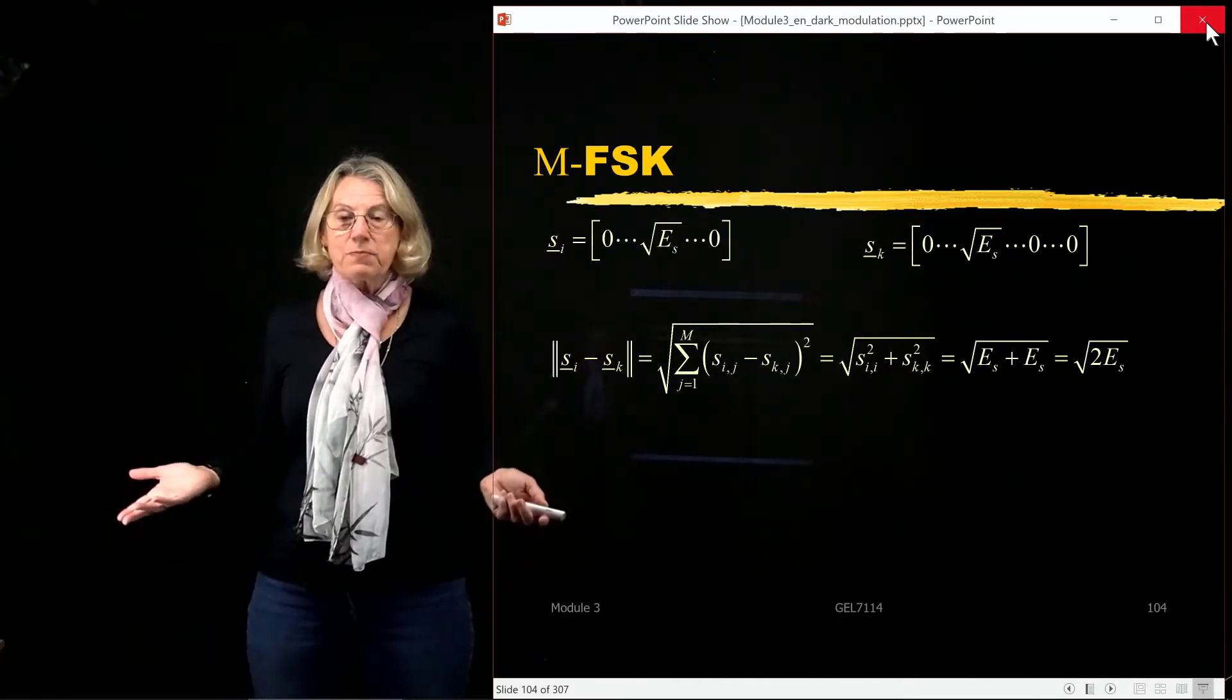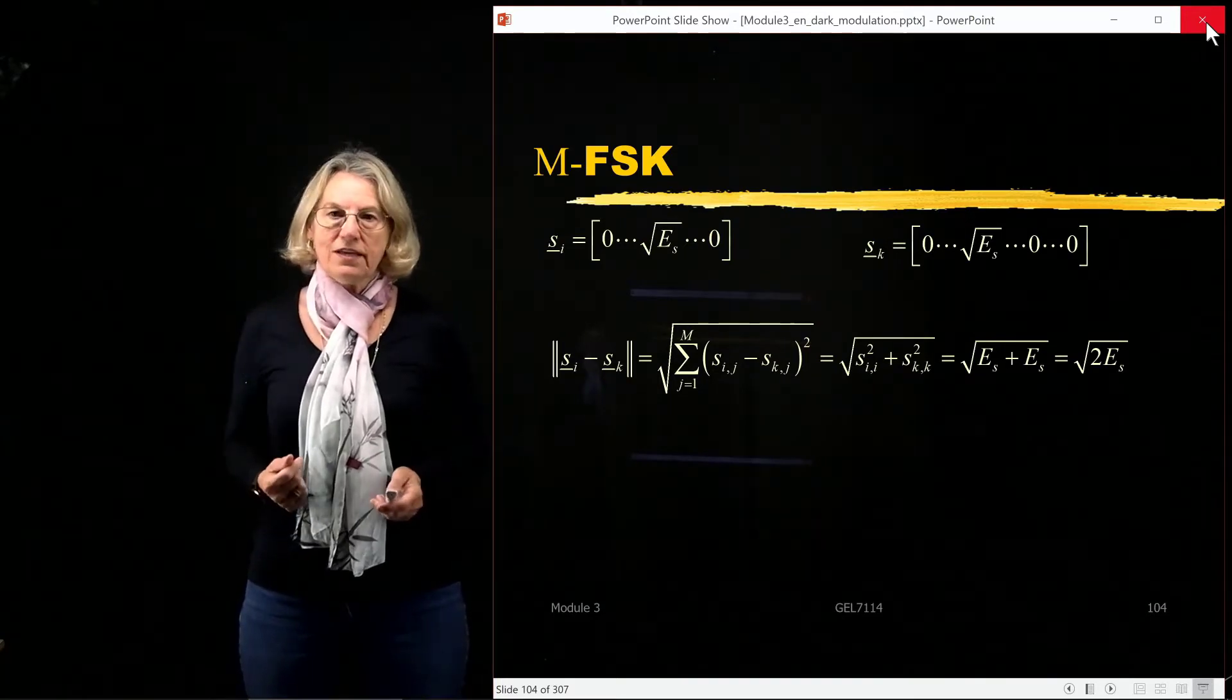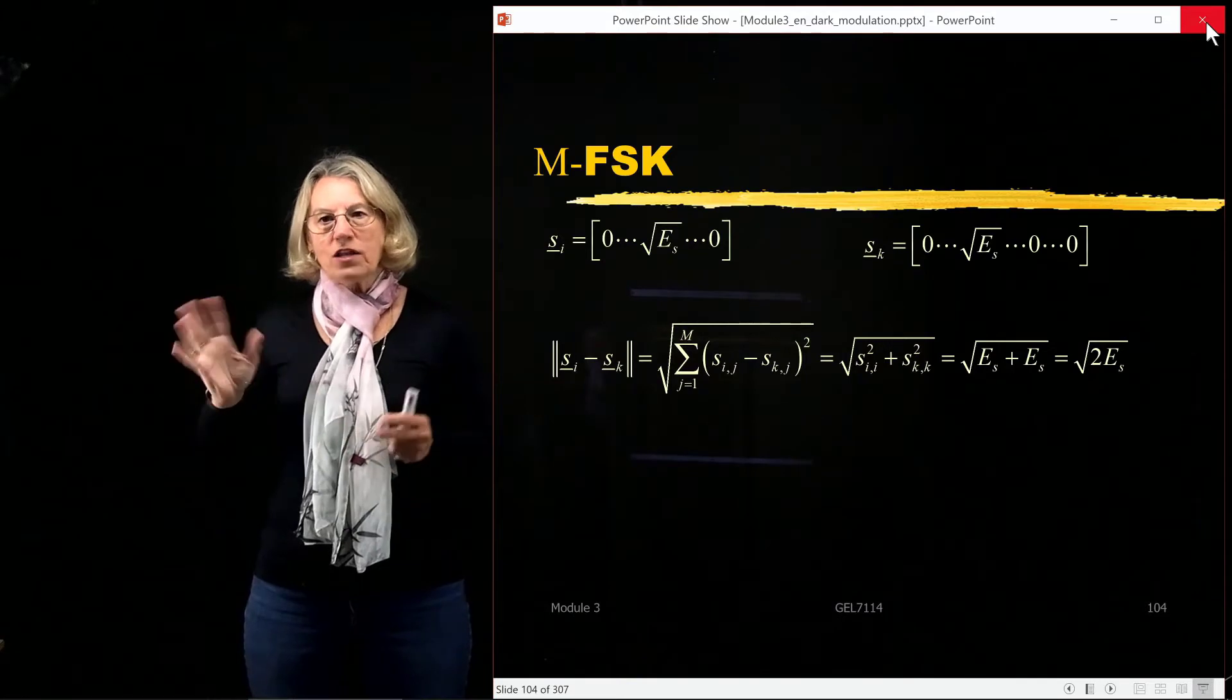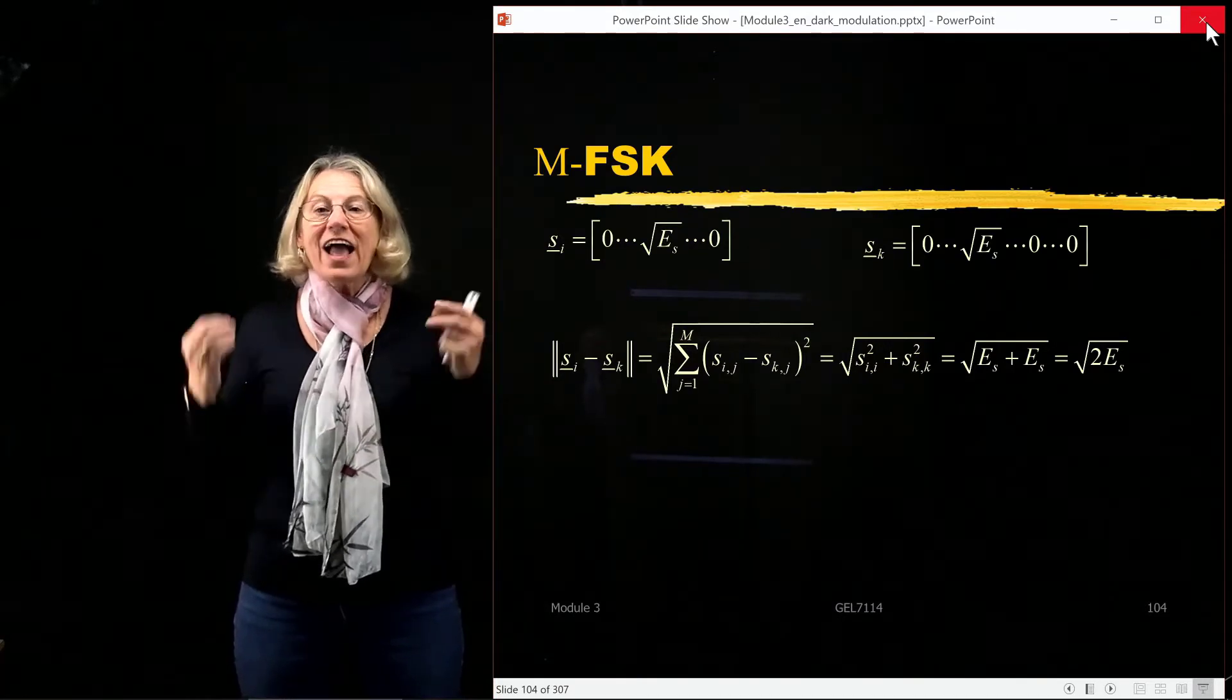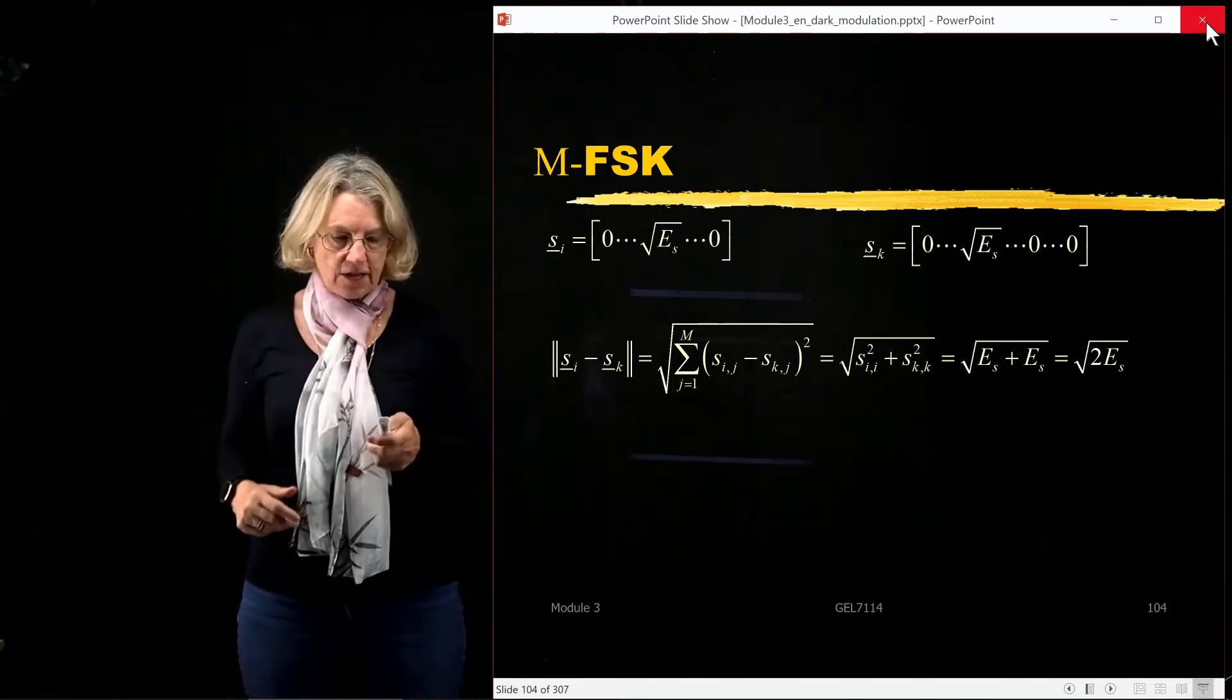So that is the distance between symbol i and symbol k. And of course, there's nothing special about i and k. So this will be the case for any two symbols in the space. So that means that all of the symbols are equidistant from one another on top of being equal energy.